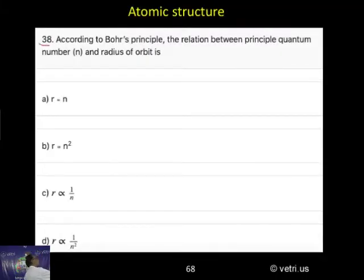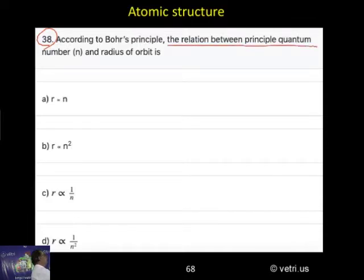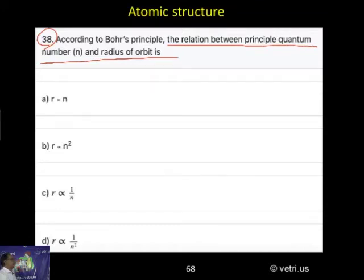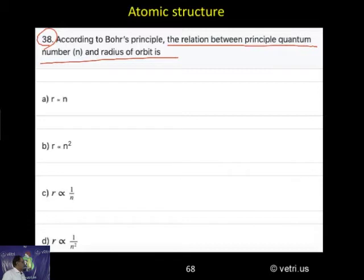Next question, 38. According to Bohr's principle, the relationship between principal quantum number and radius of orbits is: (a) r is proportional to n, (b) r equal to n square, (c) r proportional to 1 by n, (d) r proportional to 1 by n square.